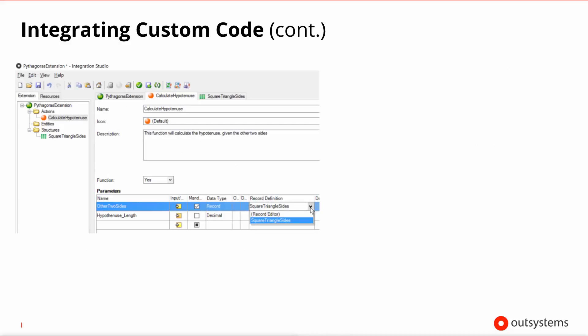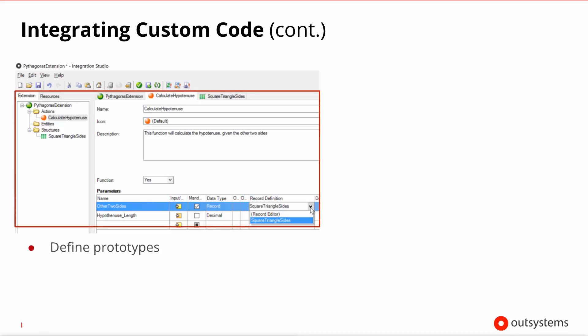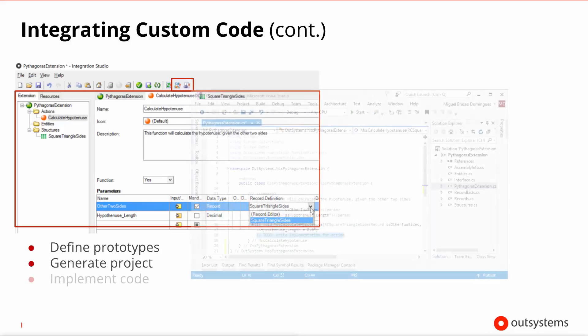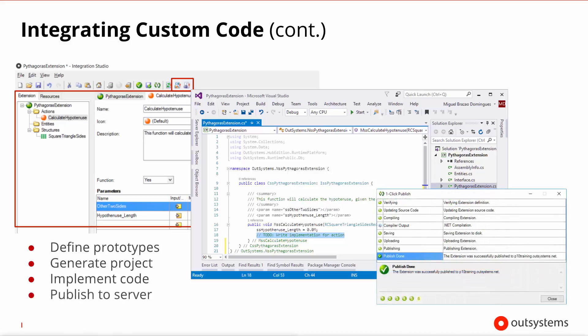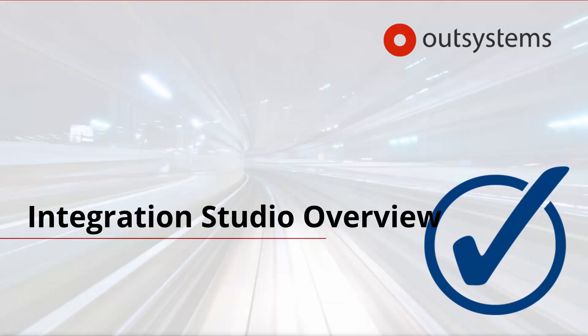The steps are very simple. You start by defining the prototypes of the actions and the underlying structures that you will need to call from your modules. Then you generate the project that will open in the IDE of the target stack. There you will flesh out the generated stubs, and upon publishing the extension to the server this functionality becomes available to your applications. The way to consume any of these functionalities from an extension is similar to the way you've consumed resources from other modules via the Manage Dependencies dialogue in Service Studio. And that's Integration Studio in a nutshell. See you in the next lesson!